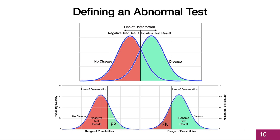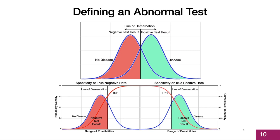Unfortunately, this is the reality of clinical medicine, because no test in medicine is perfect. The left panel shows that if we move the line of demarcation to the right, we would increase the number of patients with no disease who have a positive test result, depicted by the red cumulative probability curve, which is the true negative rate, or specificity. The right panel shows that if we move the line of demarcation to the left, we would increase the number of patients with disease who have a positive test result, which is the true positive rate, or sensitivity.